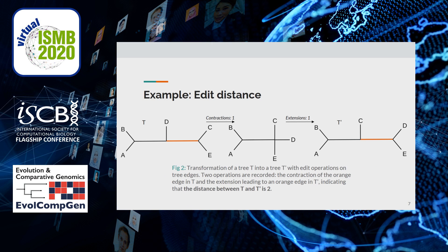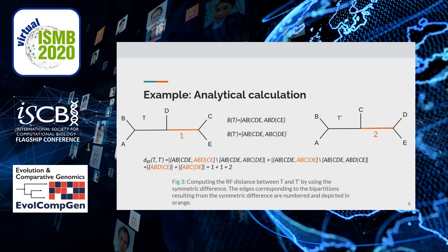Figure 2 depicts those edit operations by illustrating the transformation of a tree t into a compared tree t prime. We observe an edge contraction followed by an edge extension. Those operations are recorded and our total count represents the distance between t and t prime. Figure 3 illustrates the same example, but describes the method usually applied to compute the distance. We observe that each tree has only one non-trivial bipartition not present in the other, making a total of two bipartitions and a distance of two between t and t prime, just like in Figure 2.